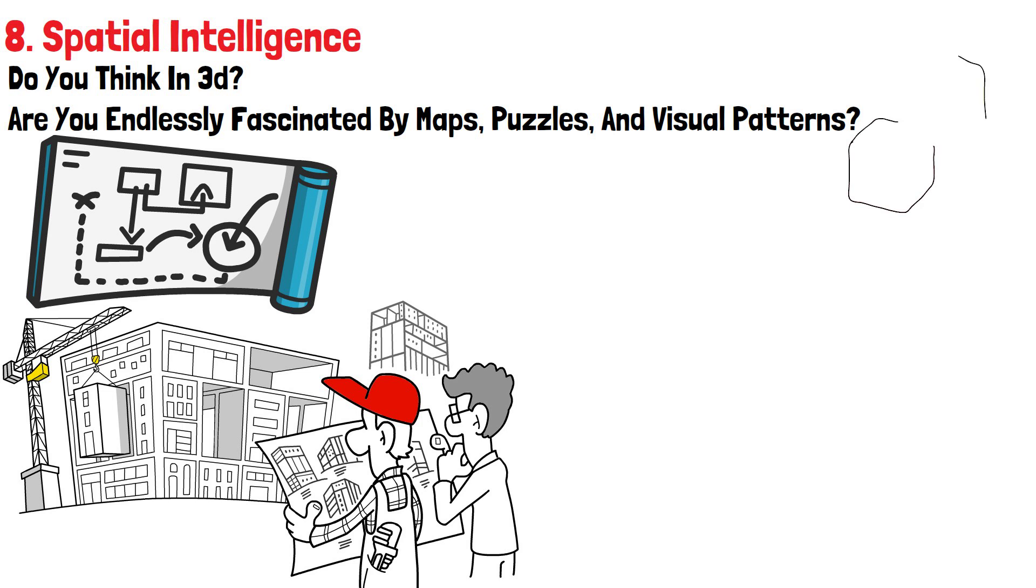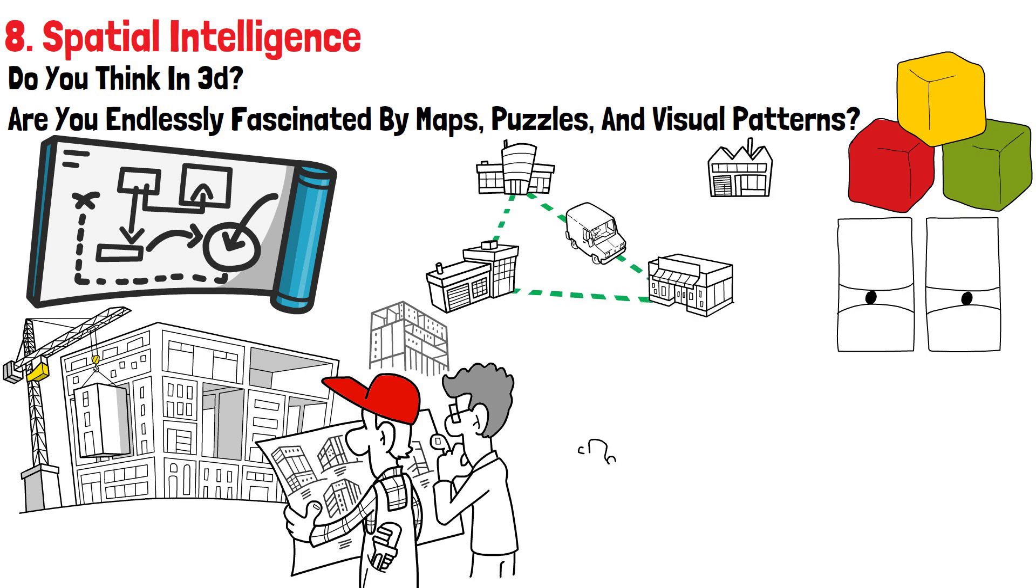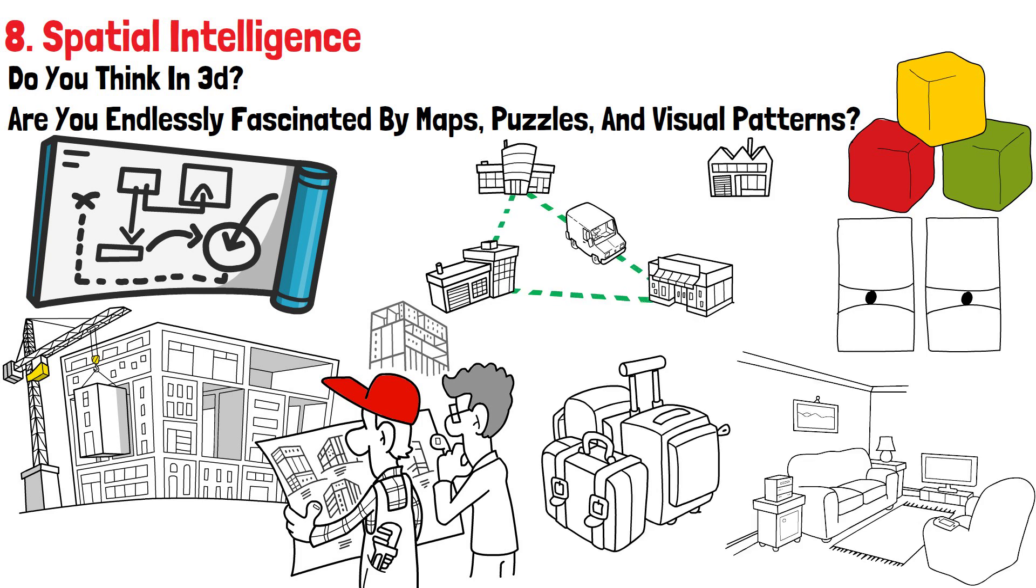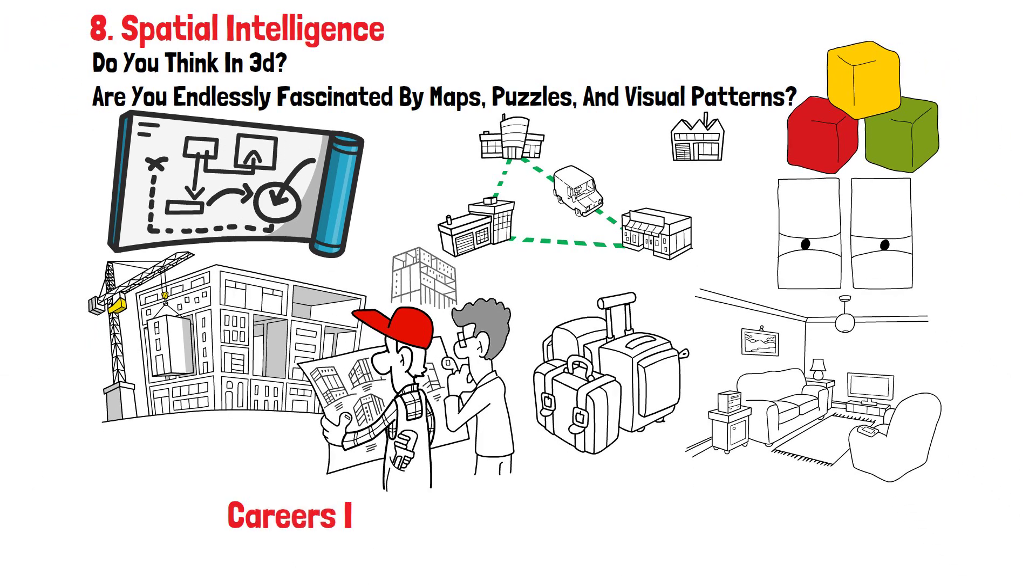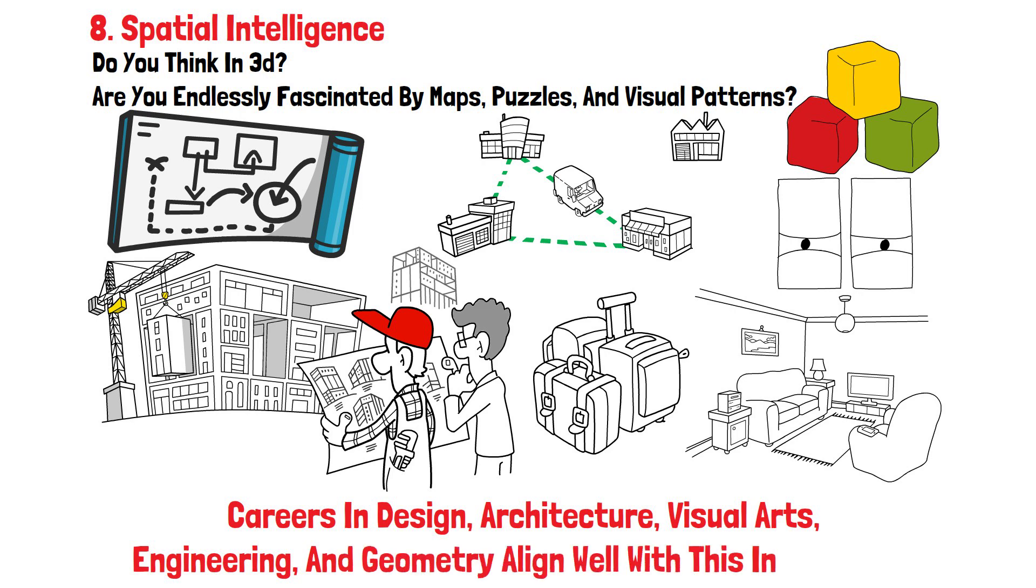You may have been the kind of child who could spend hours stacking blocks or assembling models. As an adult, you likely have excellent orienteering skills and a keen eye for detail. Driving, packing luggage, and even decorating a room probably comes naturally to you thanks to your spatial smarts. Careers in design, architecture, visual arts, engineering, and geometry align well with this intelligence.